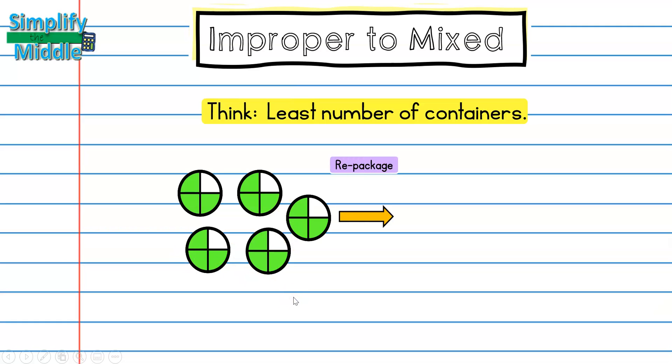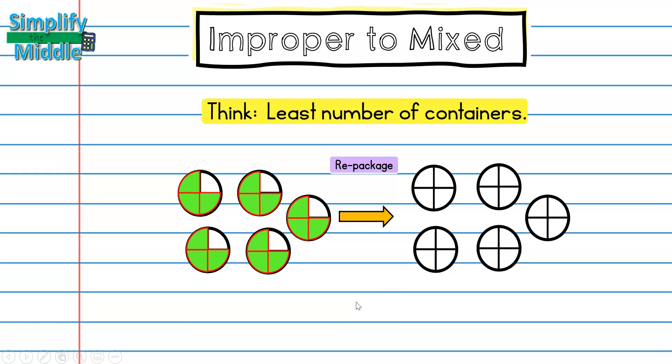And when I repackage it, I know that each piece of pizza is the same size. It's a fourth of the box, so I'm going to go ahead and draw out my frames of fourths, and each frame is going to represent a box. Then I'm going to move the pieces of pizza, which I'm going to highlight in red, into each of those boxes.